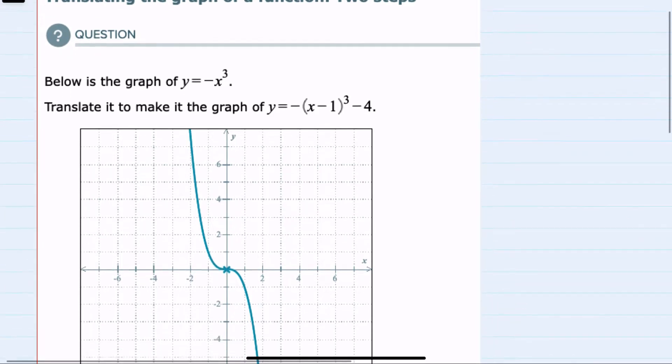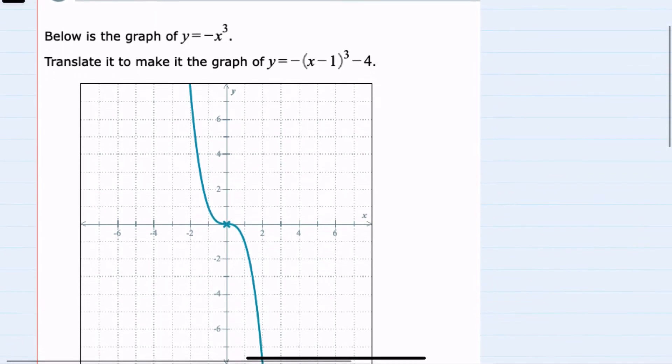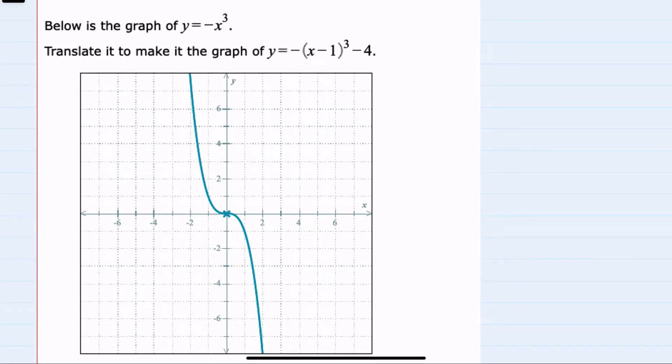We're given the graph of y equals negative x cubed, and we're asked to translate it to make the graph of y equals negative x minus 1 cubed minus 4.